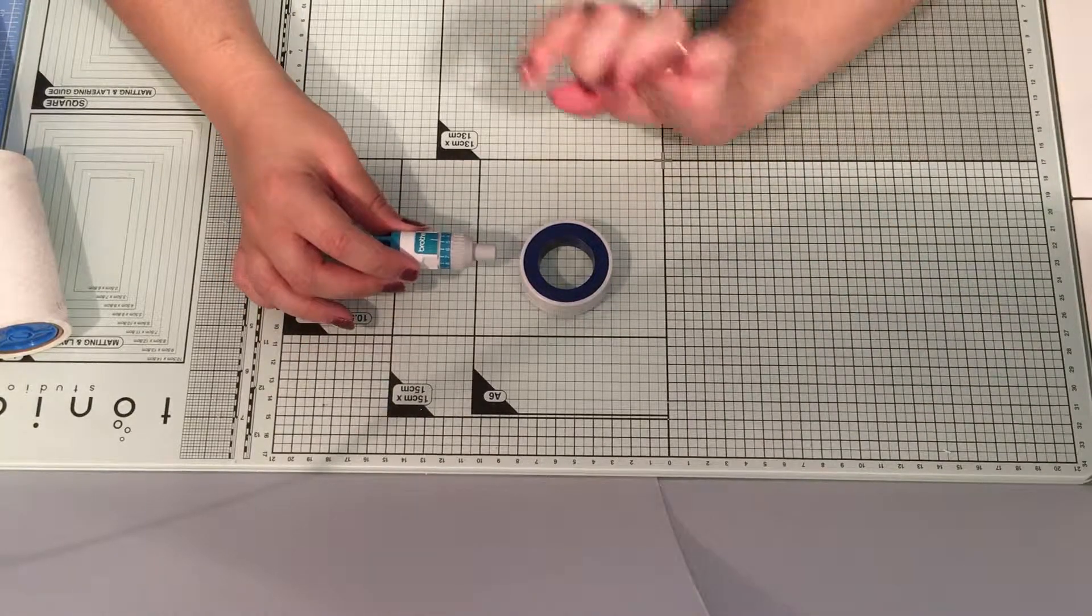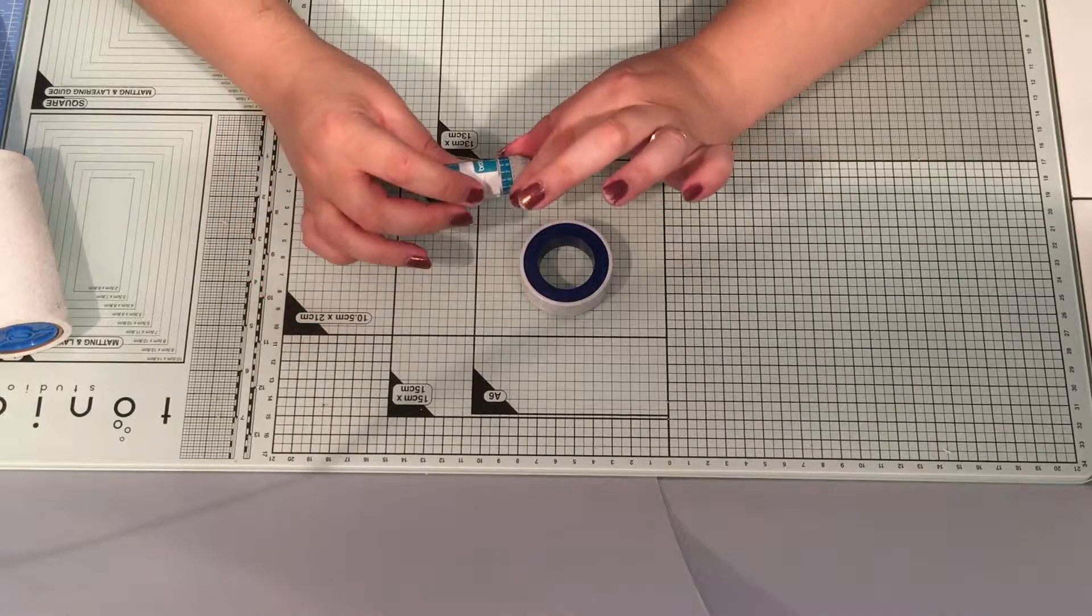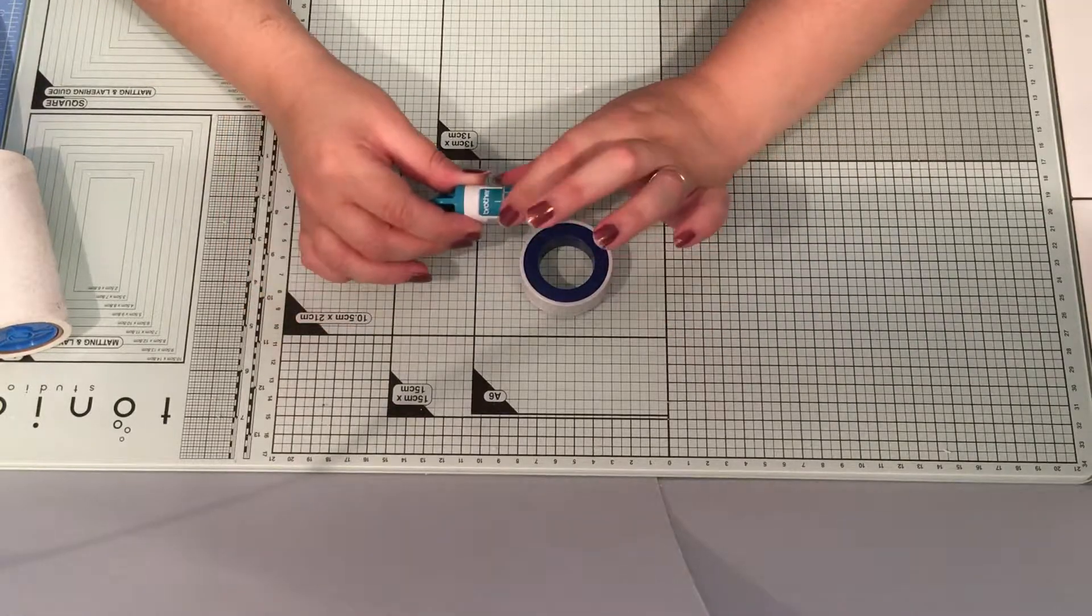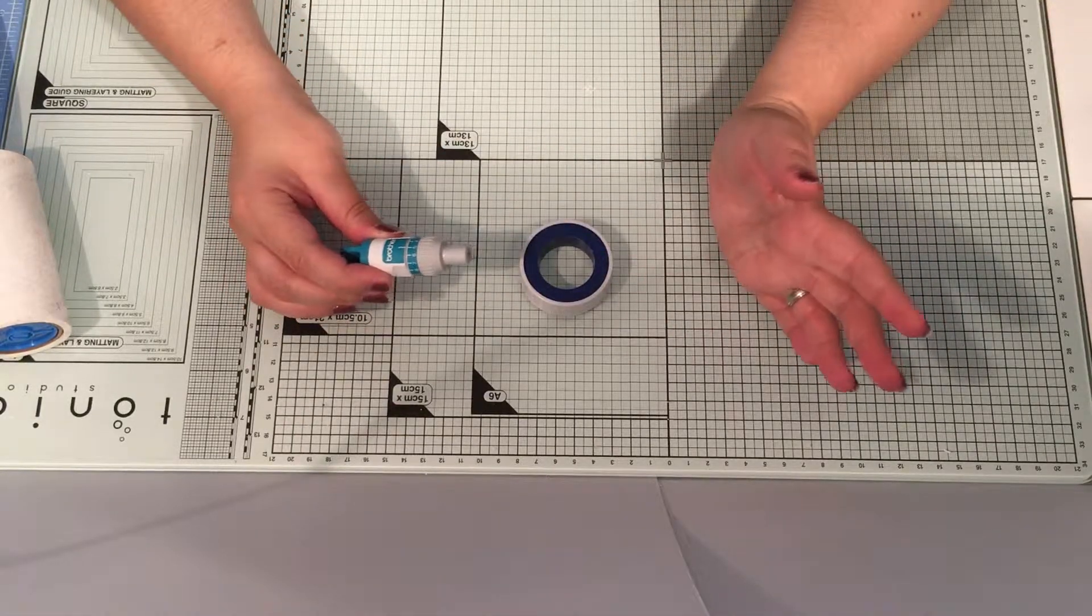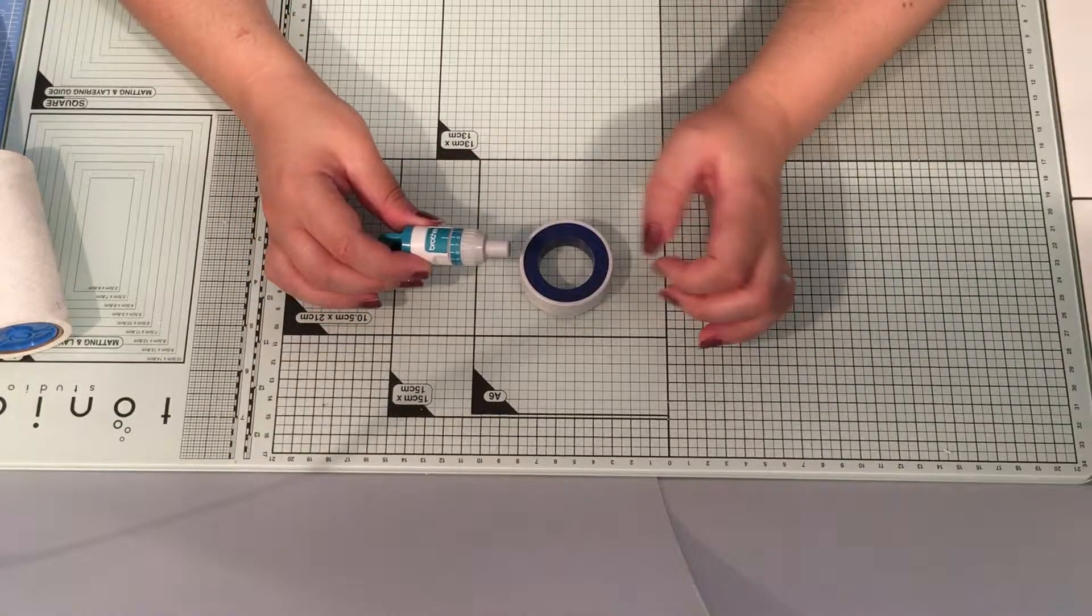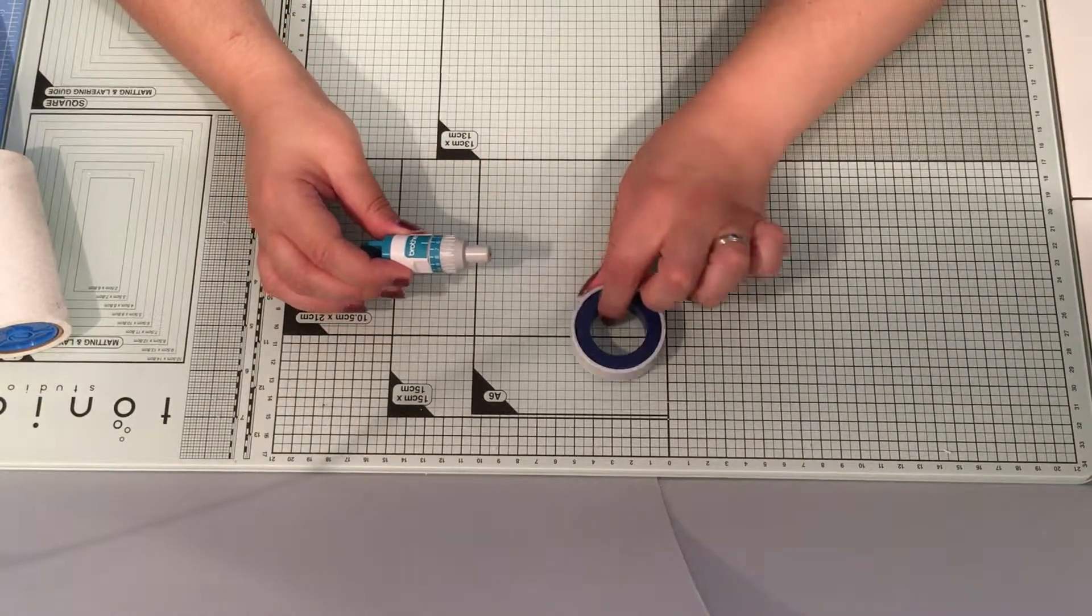If you are finding that your blade is slipping in numbers as you're cutting, so for instance, if you set it to a 7 and you find it's down at a 5 by the time it's finished cutting, it's because you need to apply some PTFE tape to your screw thread.